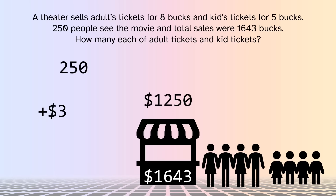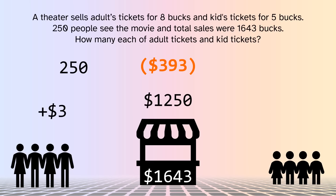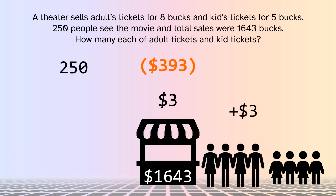But we know the total sales were one thousand six hundred and forty-three — they came up short. One thousand six hundred and forty-three minus one thousand two hundred and fifty means there's still three hundred and ninety-three bucks left to get. So the theater asks each adult to come back out and go through the line again. The second time, the adults each pay three bucks as they walk past. One hundred and thirty-one adults pay three bucks to cover the missing three hundred and ninety-three. Out of two hundred and fifty people total, the rest — one hundred and nineteen — must be children.